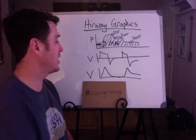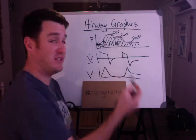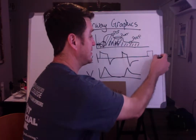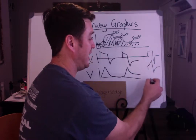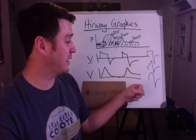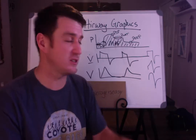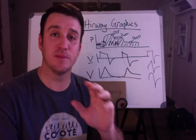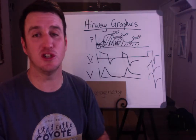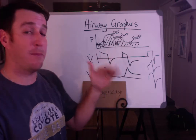The next waveform is the flow waveform. It comes in several different patterns: you can have decelerating like in this illustration, square which looks like this, accelerating which you'll hardly ever see, or sinusoidal which would look like this. Sinusoidal is common with spontaneously breathing patients, and decelerating is common with machine breaths. You can switch from decelerating to square, but generally it's not a big issue — just know the difference and know you can see them in different forms.